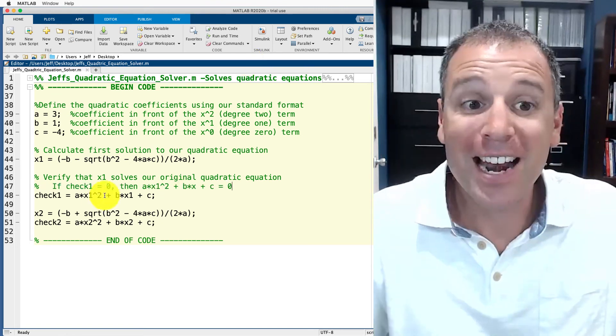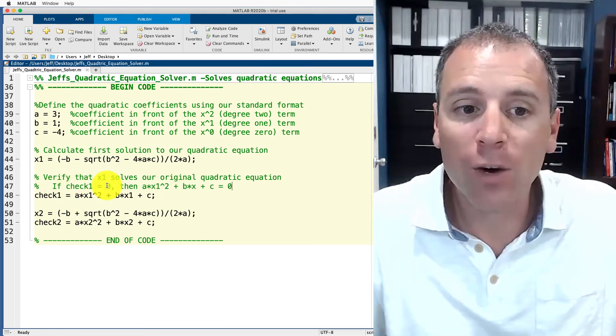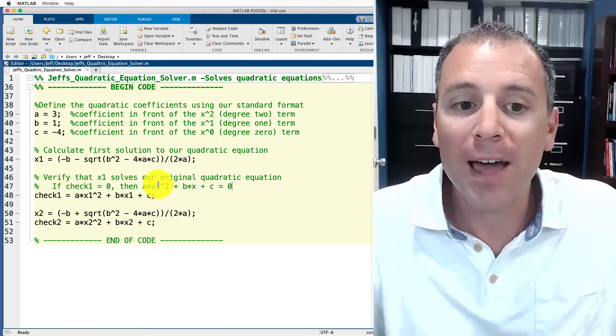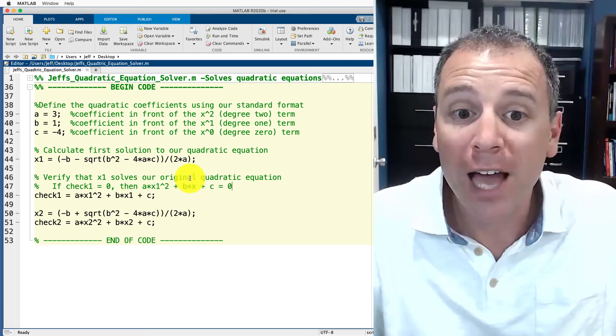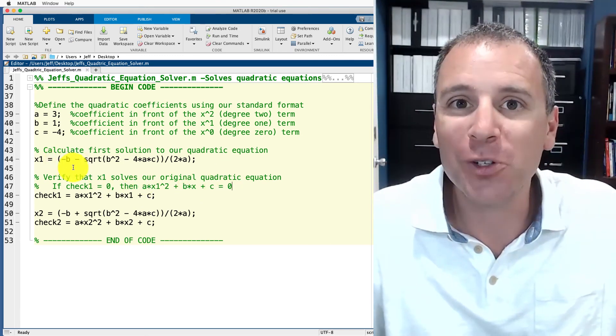Then I specifically highlight that if check one is zero, then I know that the quadratic equation I started with actually equals zero. So in other words, x1 is a solution.